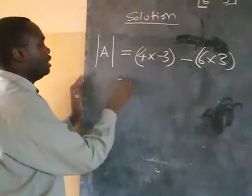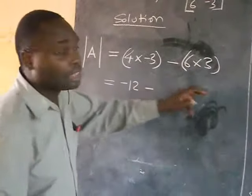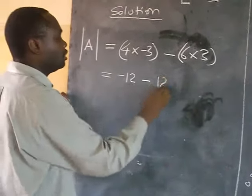Then, here we have 4 times negative 3, we have negative 12, minus 6 times 3, we have 18.